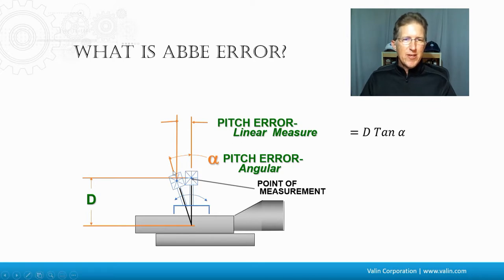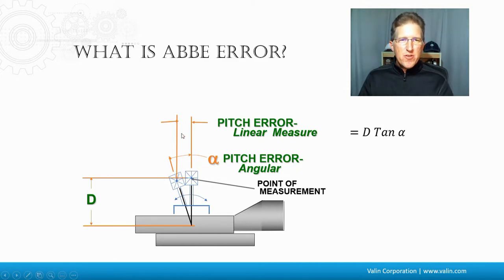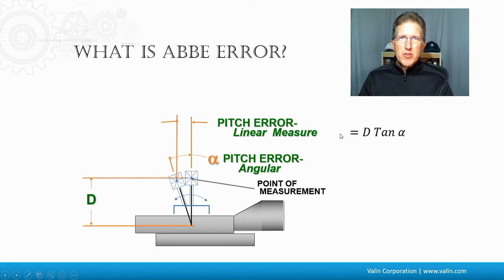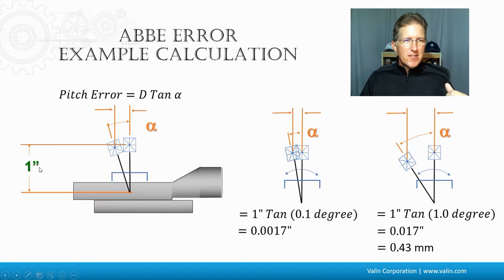As the angle changes, we get a linear error caused by that change in angle. How do you calculate that? If you know the angle and you know the distance — because we've defined that — it is trigonometry: distance times the tangent of the angle. So if d is one inch and the angle is 0.1 degrees, that linear error is 0.0017 inches.